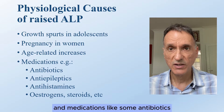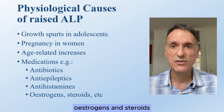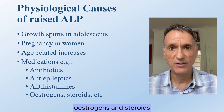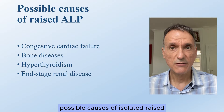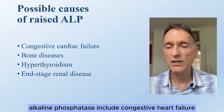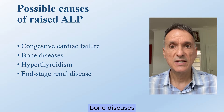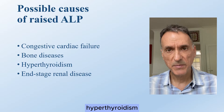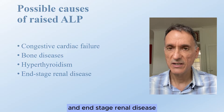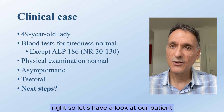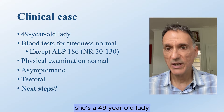Medications that can cause raised alkaline phosphatase include some antibiotics, antiepileptics, antihistamines, estrogens, and steroids. Other possible causes of isolated raised alkaline phosphatase include congestive heart failure, bone diseases, hyperthyroidism, and end-stage renal disease.